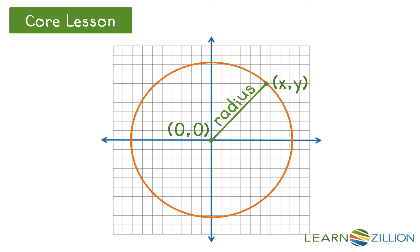How do we find the radius of the circle that passes through xy? We start by drawing a vertical line from the point xy to the x-axis. We need to know the length of this line. Because the y-coordinate of a point describes its distance from the x-axis, the length of the line is equal to the y-coordinate, or y. Next, we need to know how far that line is from the y-axis. The x-coordinate describes its distance from the y-axis, so the distance is equal to the x-coordinate, or x. Do you see the right triangle? The length of the legs are x and y, and the length of the hypotenuse is equal to the radius, r.